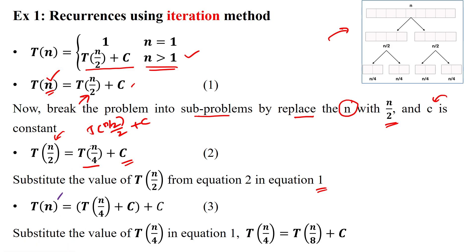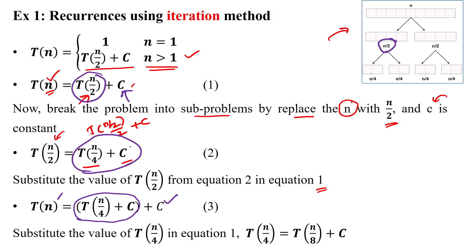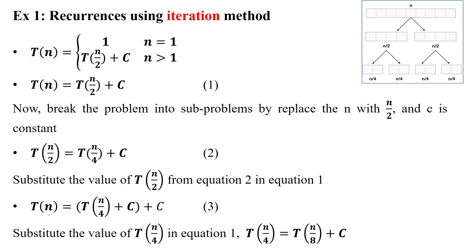After substituting, we get T(n) = T(n/4) + c + c, which is T(n/4) + 2c. Now we break n/2 into n/4. Substituting T(n/4) into equation 1 gives T(n/4) = T(n/4 divided by 2) + c = T(n/8) + c. Substituting this into the previous term, which already has two c's, we get T(n) = T(n/8) + 3c.